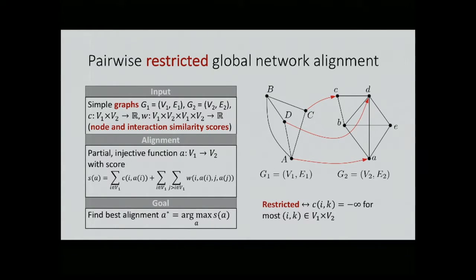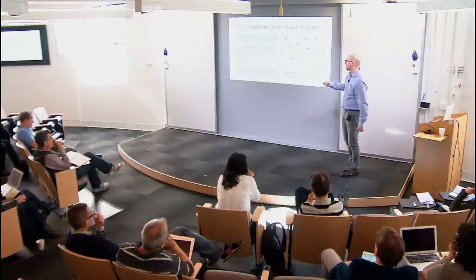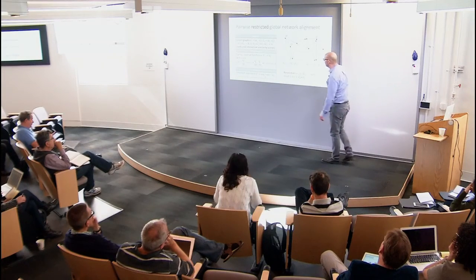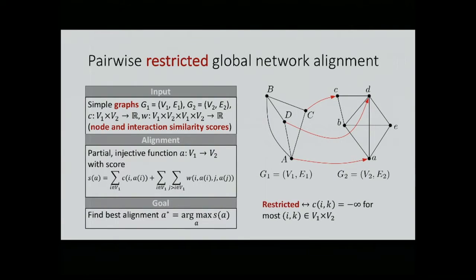I look at the restricted case, so this value C(i,k) will be minus infinity for most of the node pairs, and then we have a restricted instance. A question: Are the node pairs just connected by edges or arbitrary nodes? In this definition, this is arbitrary. But what I'm going to use later is, indeed, this function W will be, for example, one if I have an edge between a pair of nodes here and an edge between a pair of nodes there. You can use it for that case, but it is more general. The goal, of course, is a combinatorial optimization problem - to find the best alignment in this scenario.